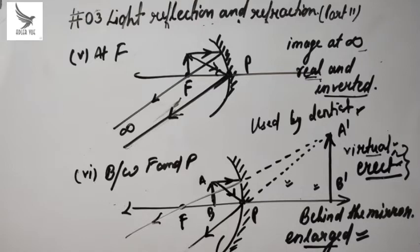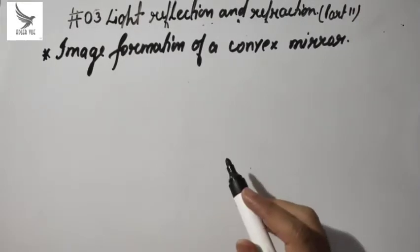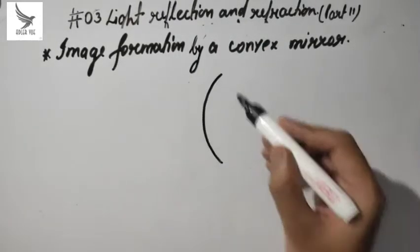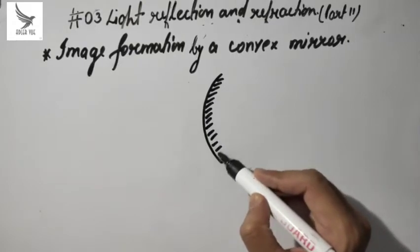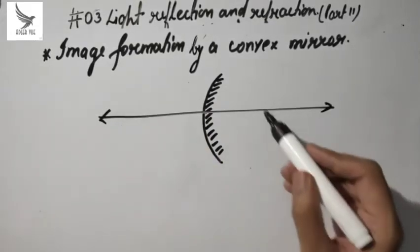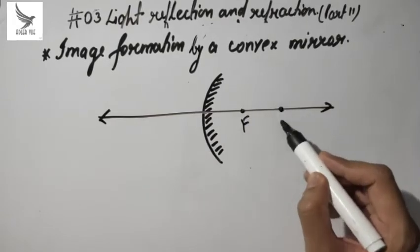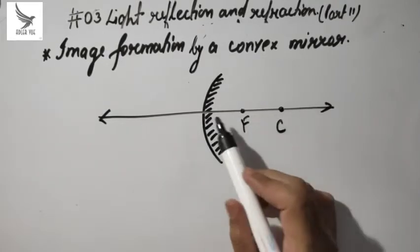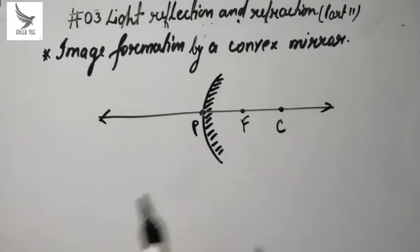So this is all about image formation of a concave mirror. Now we will see image formation of a convex mirror — how many possible cases are there. In a convex mirror, the inner part is shaded and reflection happens on the outer part. There are only two cases possible.